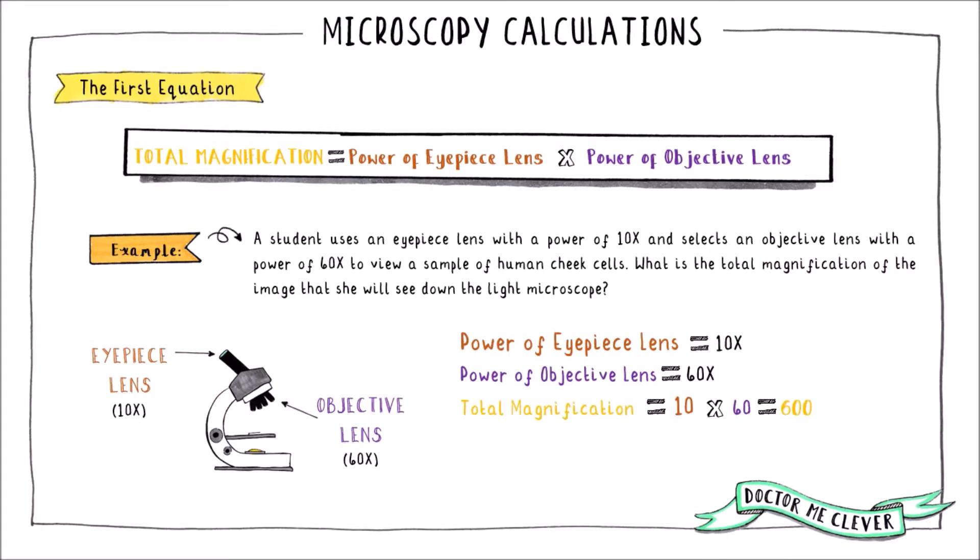So we multiply the power of the eyepiece lens which is 10 by the power of the objective lens which is 60. 10 times 60 is 600. Therefore the total magnification is 600 times or 600x.